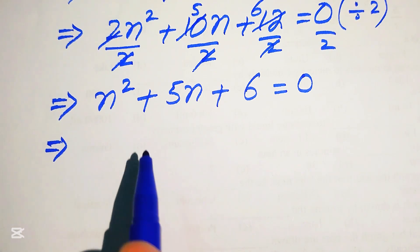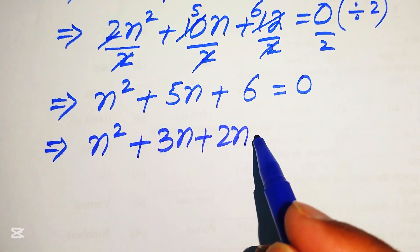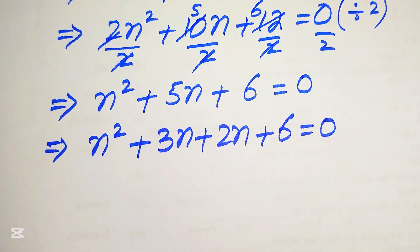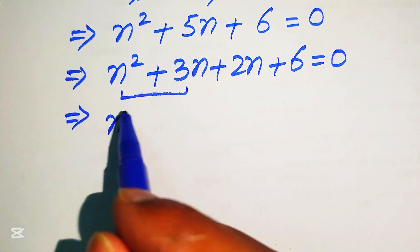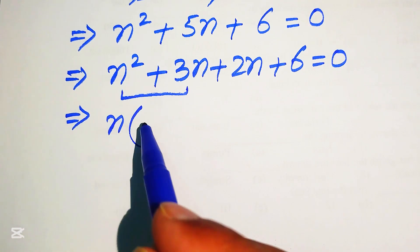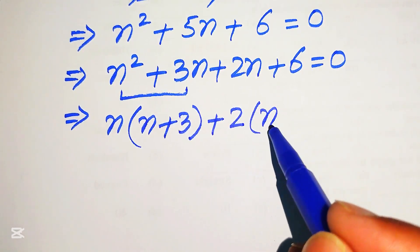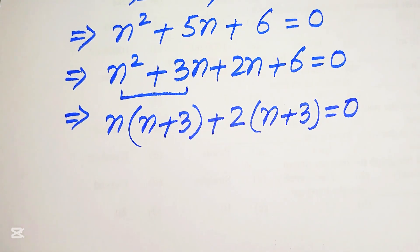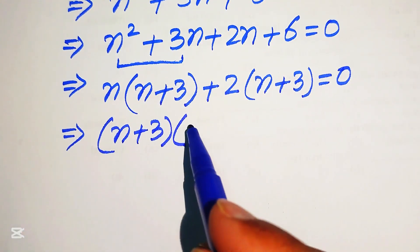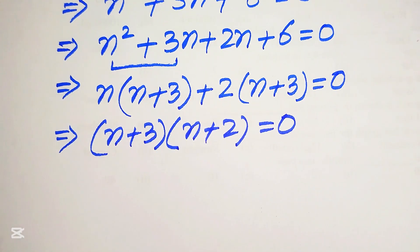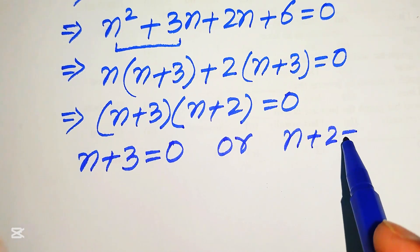Those two numbers are 2 and 3, so we write the equation as n² + 3n + 2n + 6 = 0. Taking n common from the first two terms gives n(n + 3), and taking 2 common from the last two terms gives 2(n + 3). So we have (n + 3)(n + 2) = 0.